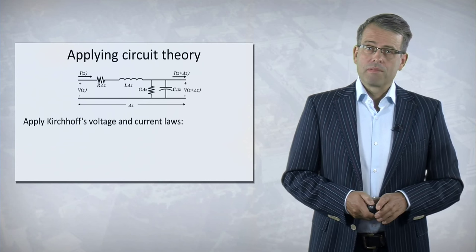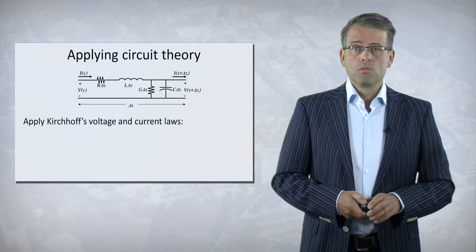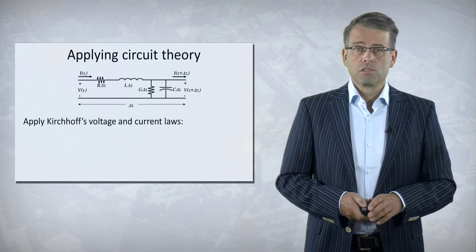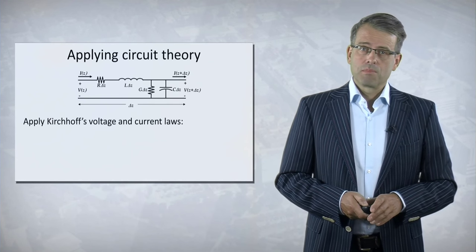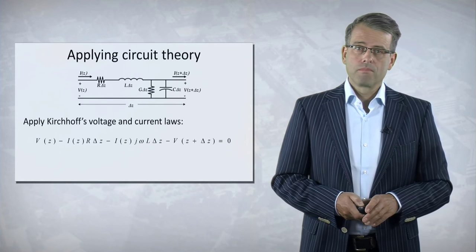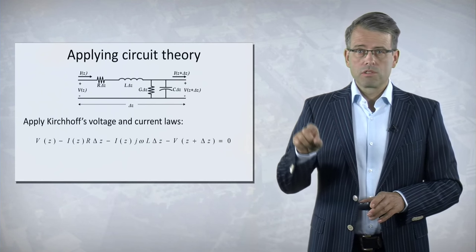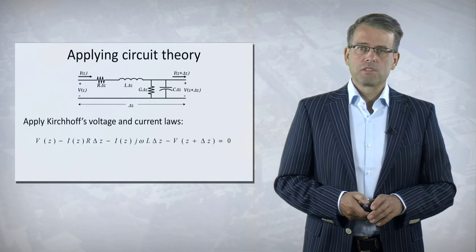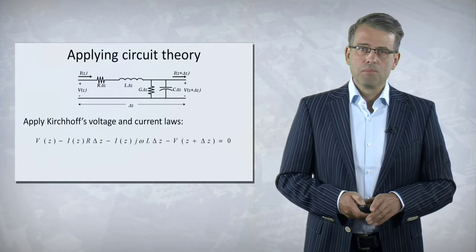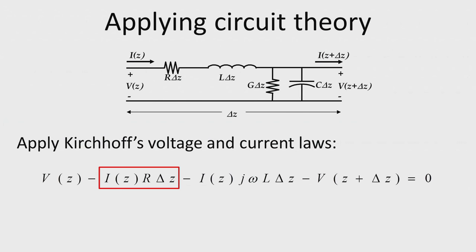Now we have an equivalent circuit. The next step is to use Kirchhoff and try to find a solution for the voltage and the currents. So let's apply Kirchhoff and start with the voltage law. If we walk around in the circuit, we know that the total voltage has to be zero. Which means that the voltage at the input minus the voltage along the series resistance minus the voltage along the inductor minus the voltage at the output has to be zero.